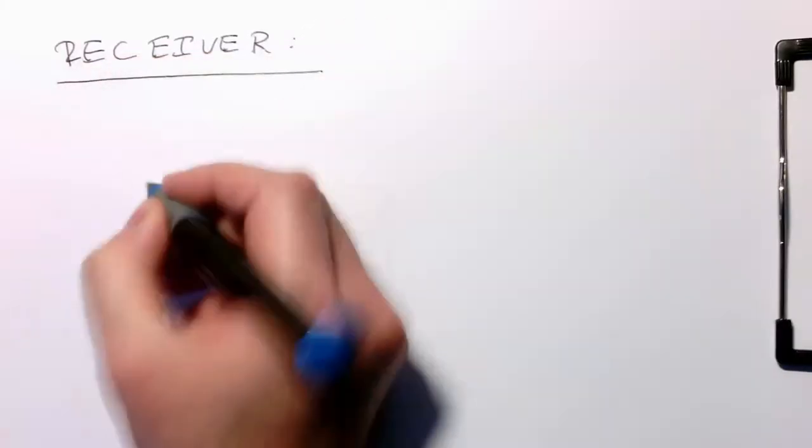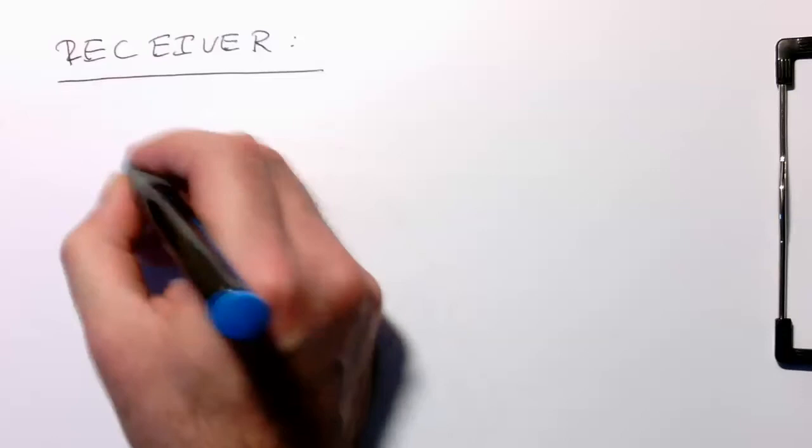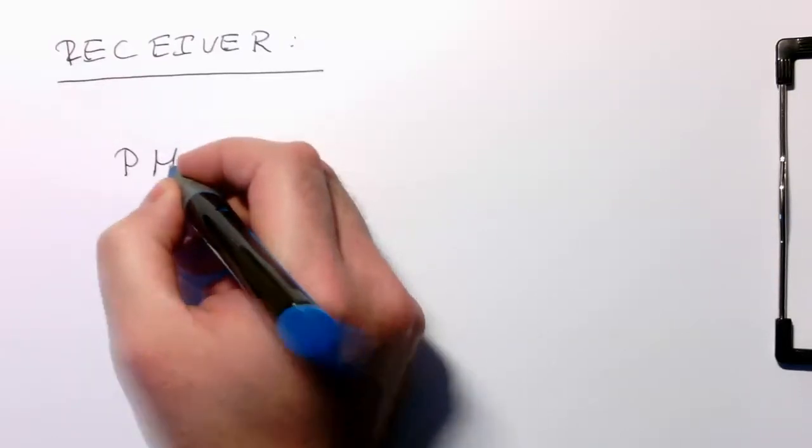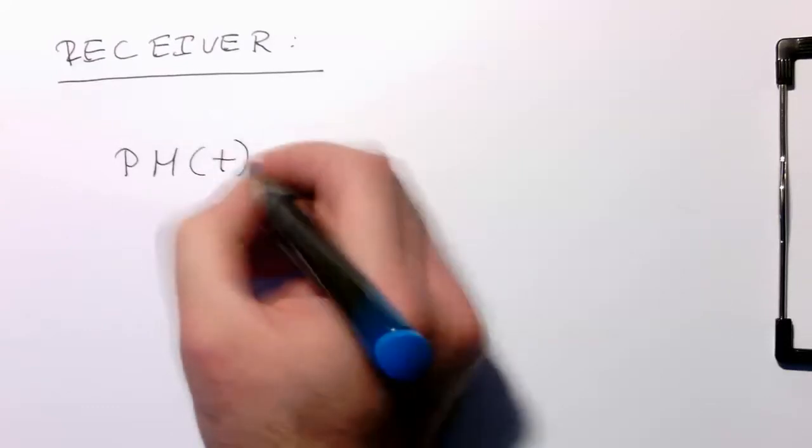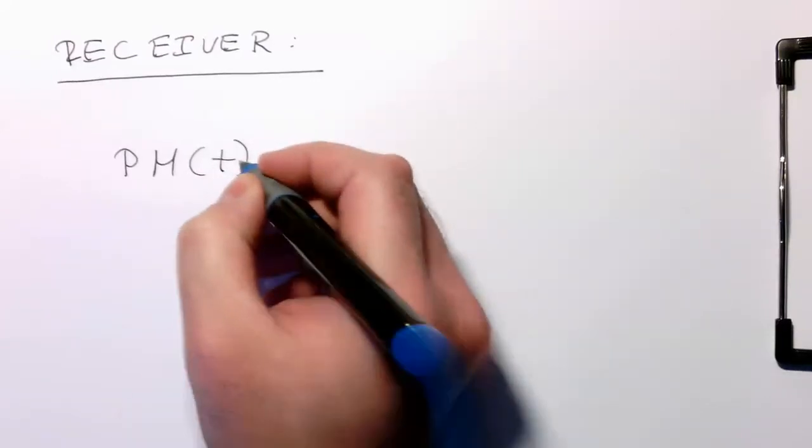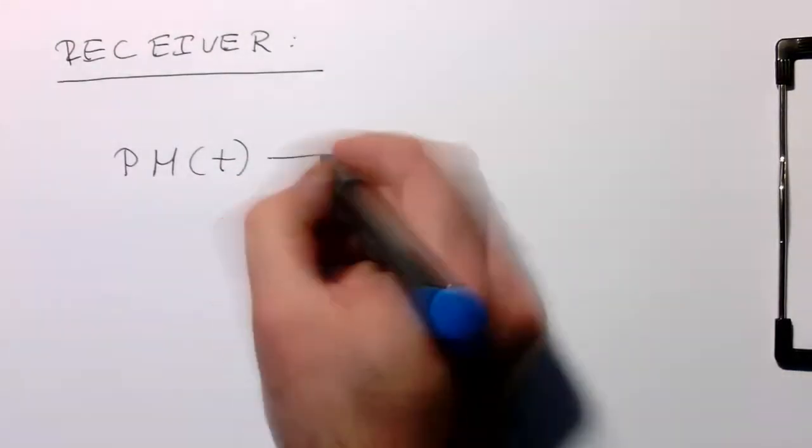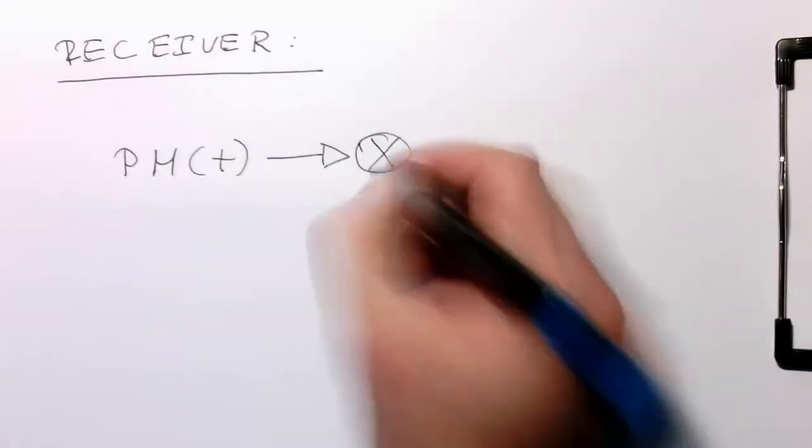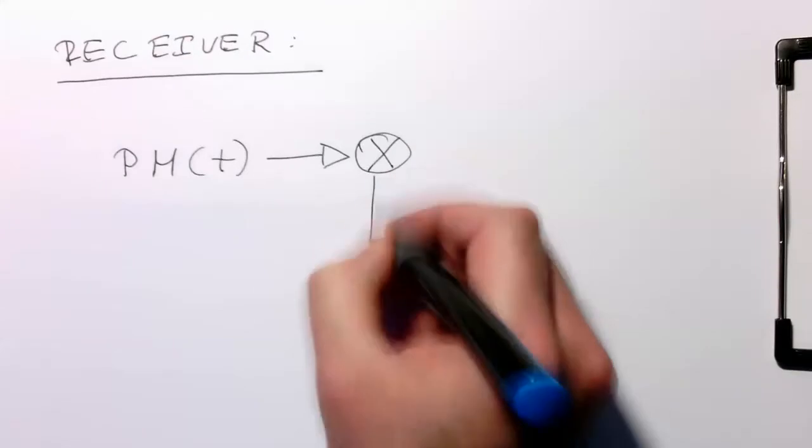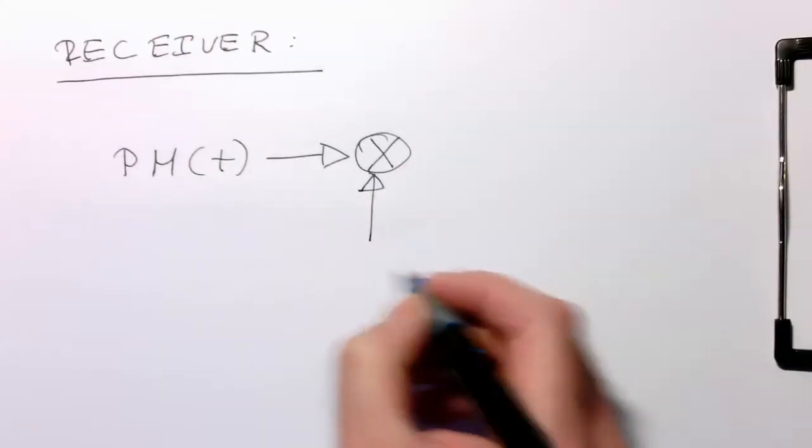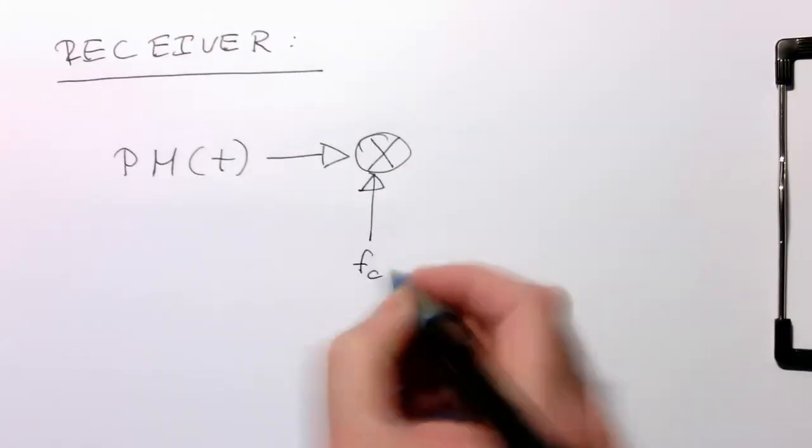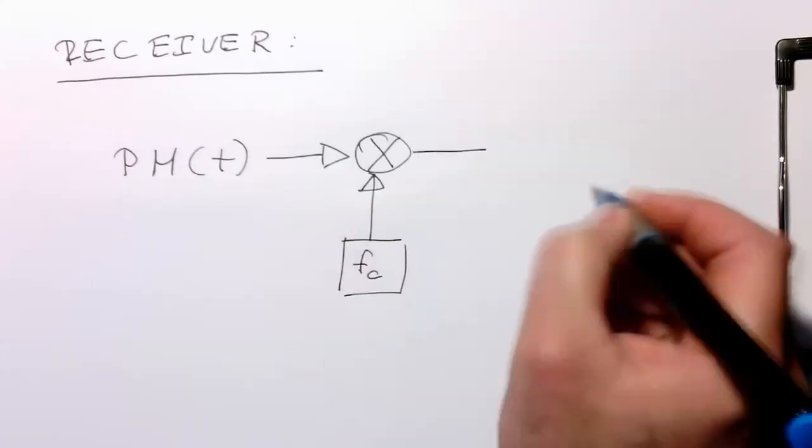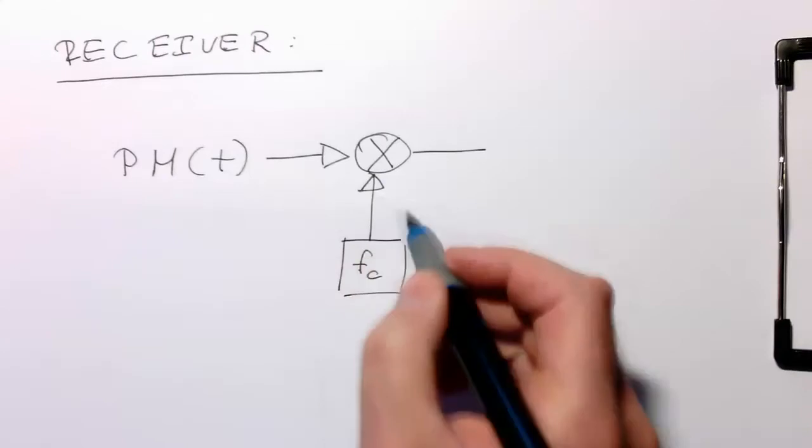Here we have our phase modulated signal. What we do is use a multiplier again and multiply this with our carrier frequency fc. Why is this a good idea?